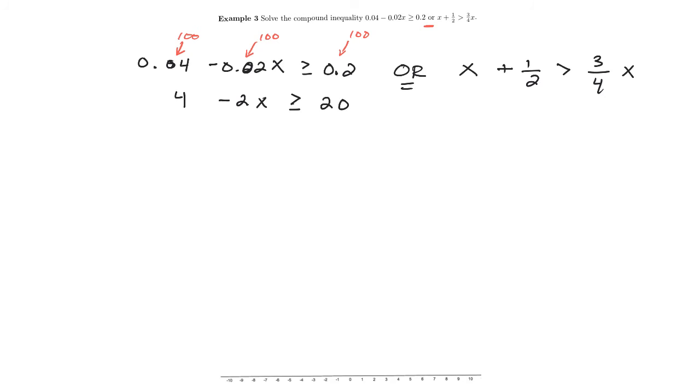Okay, maybe now I'll subtract 4 from both sides. So I get negative 2x is greater than or equal to 16. But now I'm going to divide both sides by negative 2. And as we've seen before, that gives me x, but now it's going to be less than or equal to negative 8. And that's as far as I can take this one.